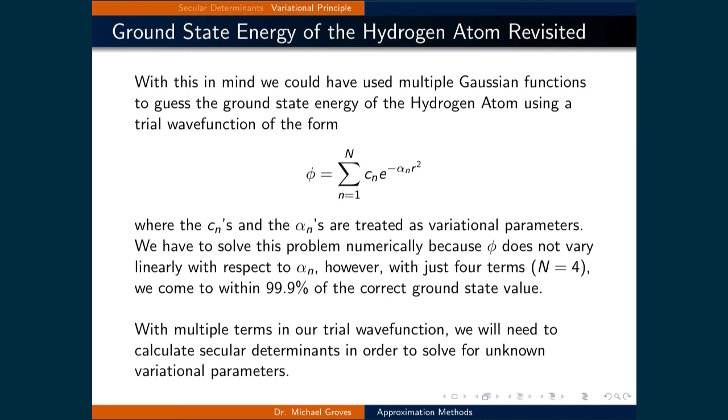However, using software that does the calculations, we can come to within 99.9% of the correct ground state energy for the hydrogen atom with just four terms.